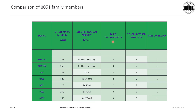Regarding 16-bit timer counters: the 89C51 has only 2 timers, but the 89C52 has 3. The 8031, 8751, and 8051 all have only 2 16-bit timer counters, but the 8052, 8752, and 89C52 all have 3 16-bit timers or counters. For vector interrupts: the 89C51, 8031, and 8051 each have 5 vector interrupts, but the 89C52, 8052, and 8752 have 6 vector interrupts.